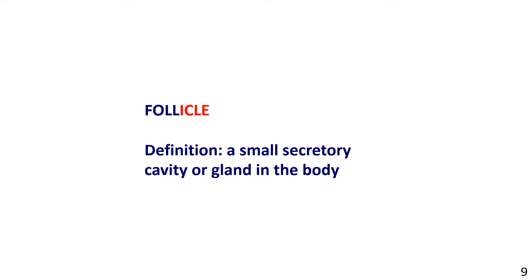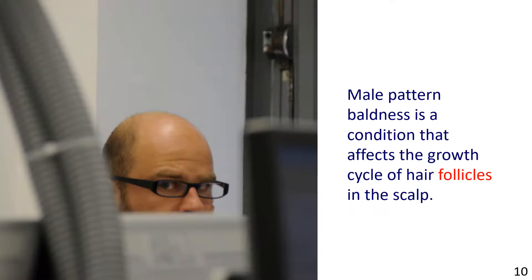FOLLICLE — Definition: A small secretory cavity or gland in the body. Sentence example: Male pattern baldness is a condition that affects the growth cycle of hair follicles in the scalp.